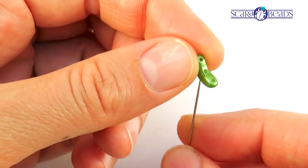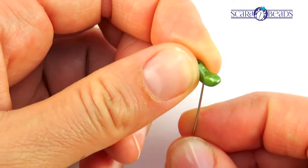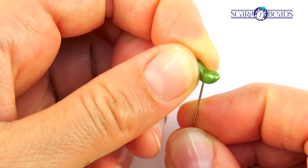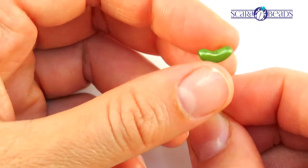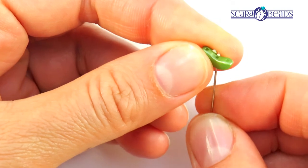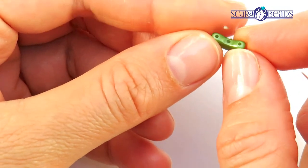In this case we will take a thick and strong enough needle and we will clean the hole with that needle. Now the bead can be used for weaving.